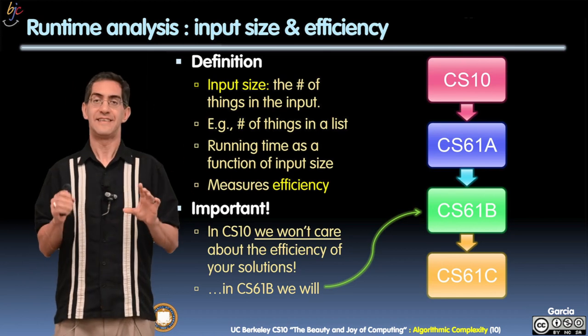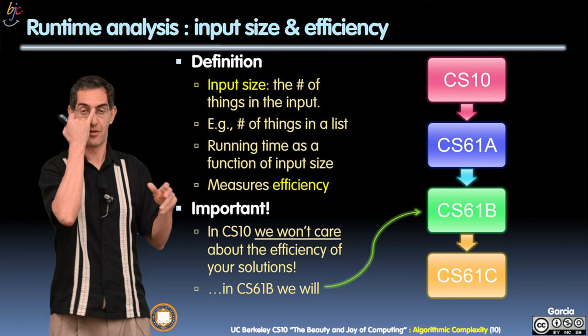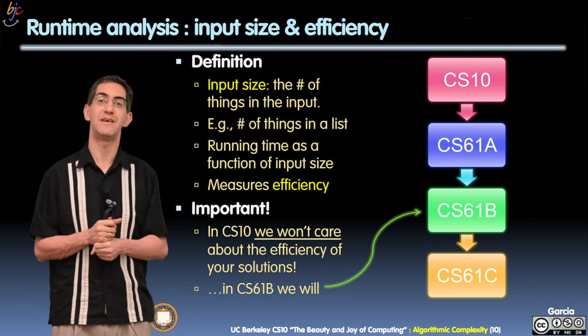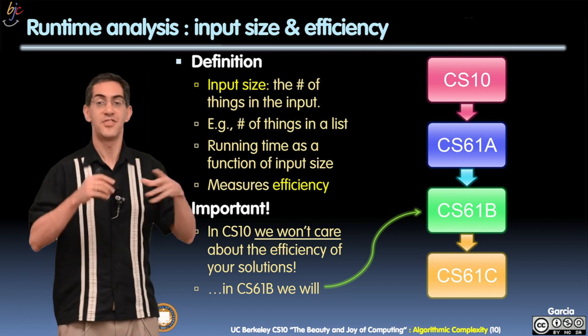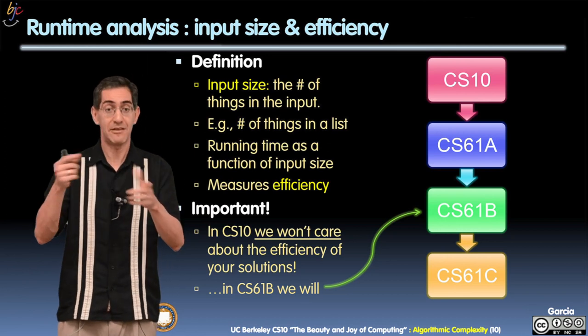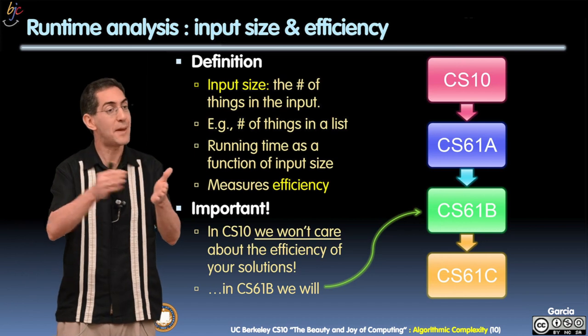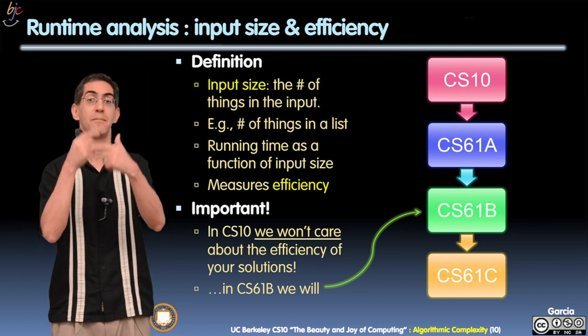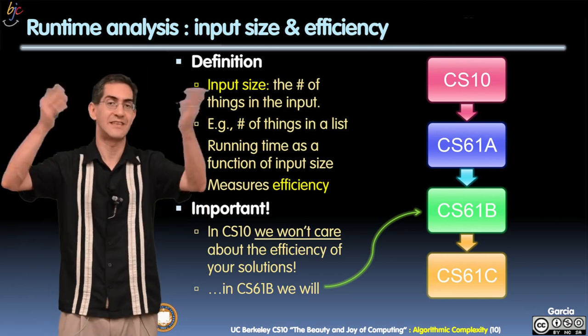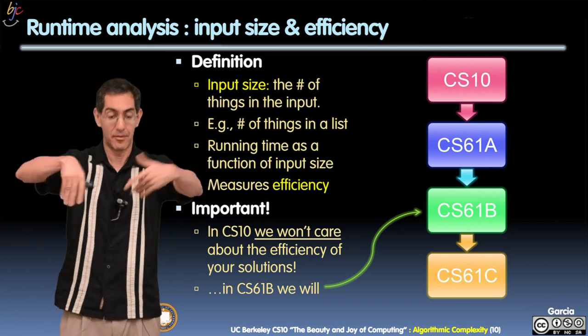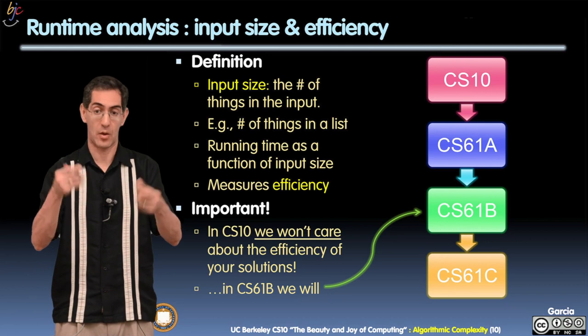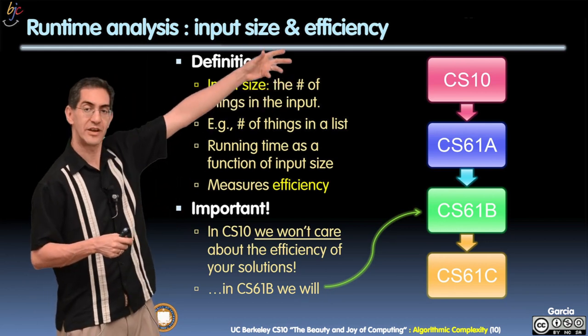So here's the definition. Running time is a function of the input size. And there may be multiple inputs, but for this simple case, we'll say there's just one input. And that usually might be the list, the length of the list, or some number n. We'll call that n. That is the size of the input. That's the number of things you're going to compute on. So if I'm going to sort some students, I'm going to sort some students by height. It's the number of students that I'm going to be sorting on is my n. How many are you operating on?